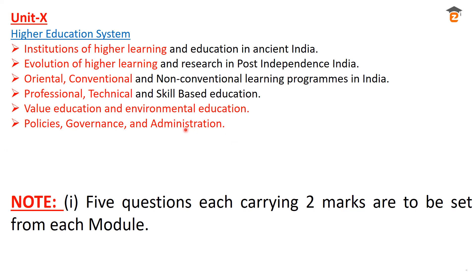Unit 10 also includes policies, governance and administration in higher education. Since UGC NET is for postgraduate students, questions from this section are very relevant. Importantly, five questions each carrying two marks are set from each of the 10 modules, making 50 questions total for Paper 1. You cannot ignore any section — each unit contributes 10 marks. Please do your best in preparation for the UGC NET exam.